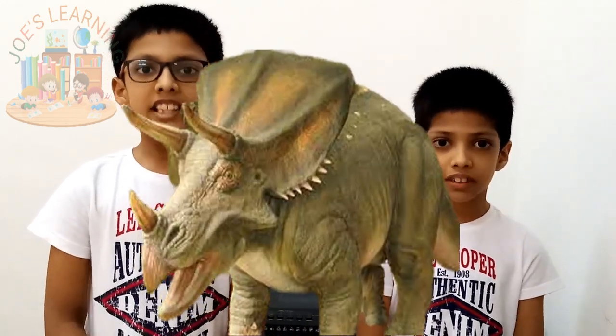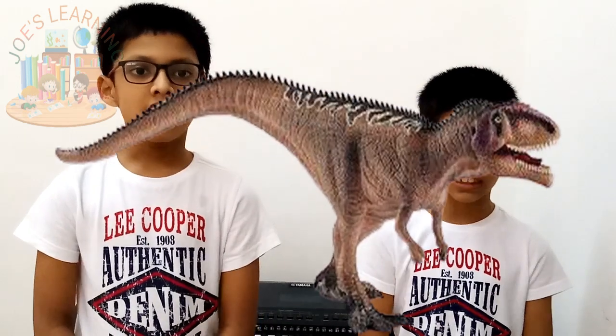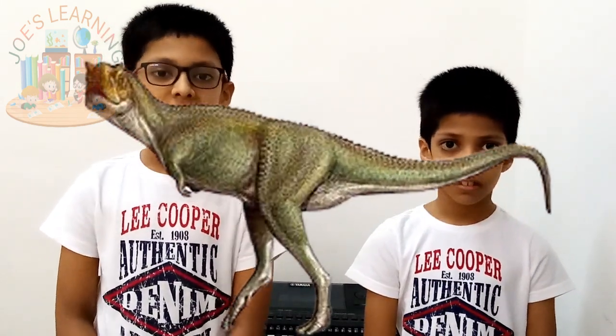A - Albertosaurus, B - Brachiosaurus, C - Chasmosaurus, D - Deinonychus, E - Edmontosaurus, F - Fabrosaurus, G - Giganotosaurus, H - Heterodontosaurus, I - Iguanodon, J - Jingshanosaurus, K - Kentrosaurus, L - Lambeosaurus, M - Megalosaurus, N - Nanotyrannus, O - Oviraptorosaurus, P - Pachycephalosaurus, Q - Quaesitosaurus, R - Rhabdodontosaurus, S - Spinosaurus, T - Triceratops, U - Ultrasaurus, V - Velociraptor, W - Wannanosaurus, X - Xenotarsosaurus, Y - Yuannosaurus, Z - Zephyrosaurus. And that's the end — hope you enjoyed this dinosaur song!